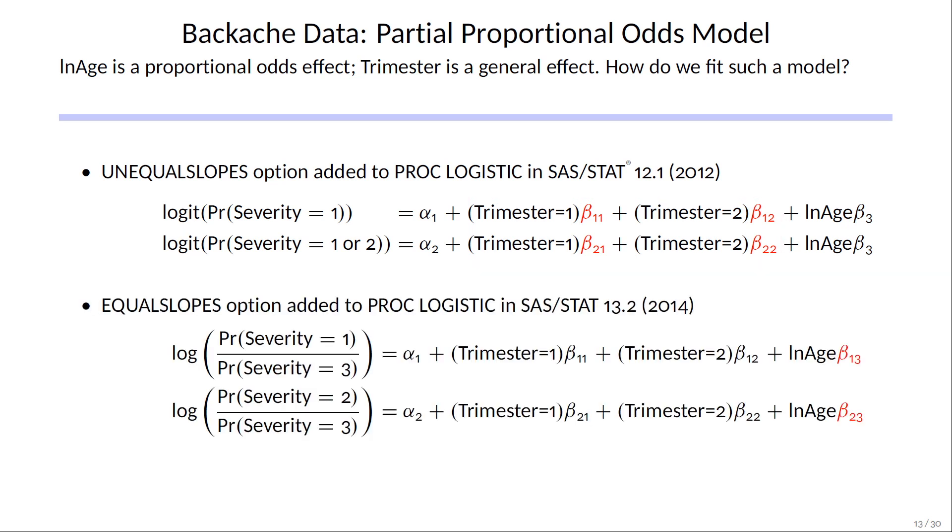A couple years later, in SAS STAT 13.2, we added an equal slopes option to do something similar for the generalized LOGIT model. The left-hand side of these functions is the generalized LOGIT, and by default this model has a complete set of parameters for each response function.